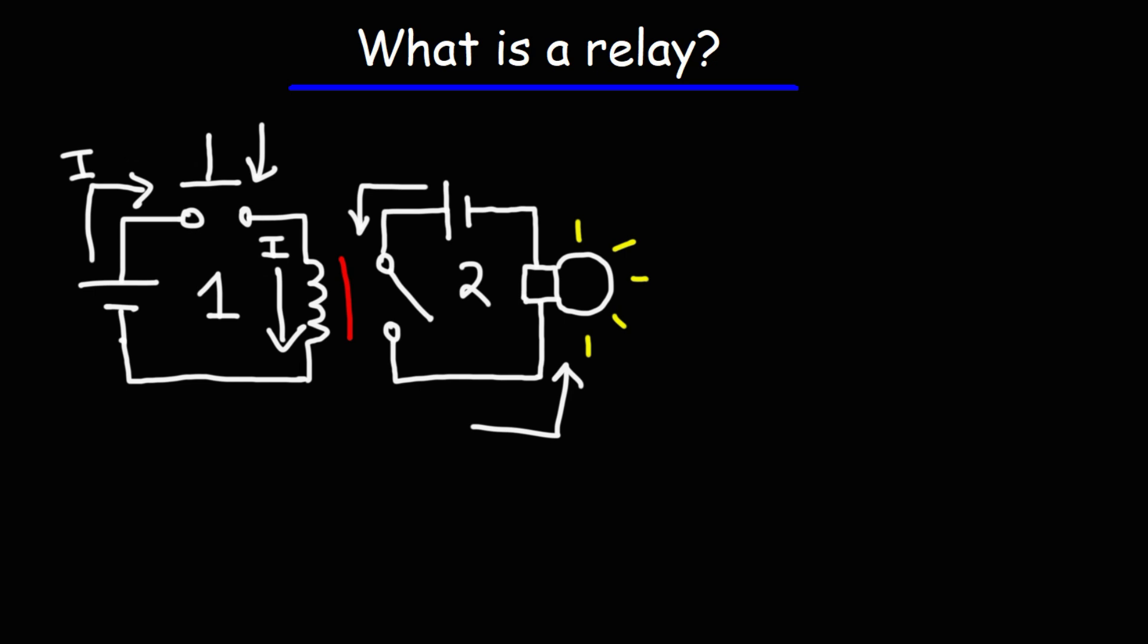And that's the basic working principle of a relay. So you're using a small amount of current in circuit one to control another circuit with a larger current in circuit two, the secondary circuit.